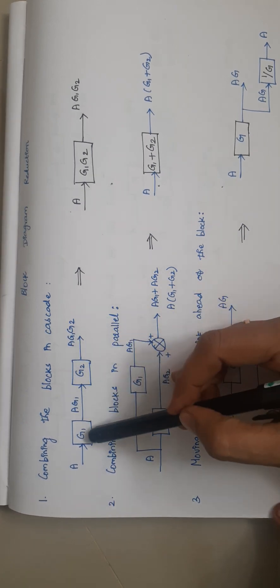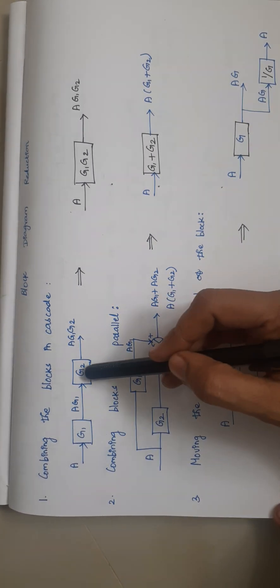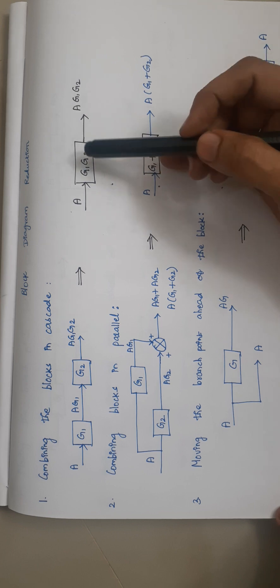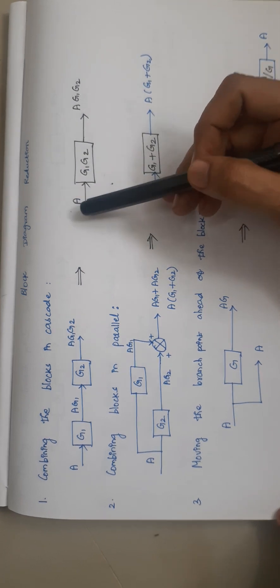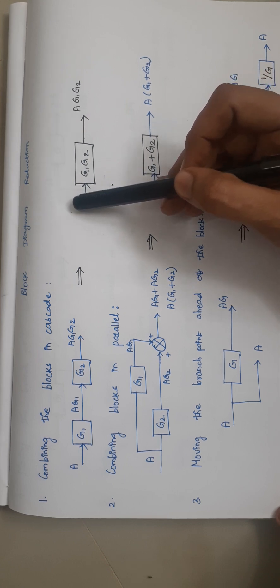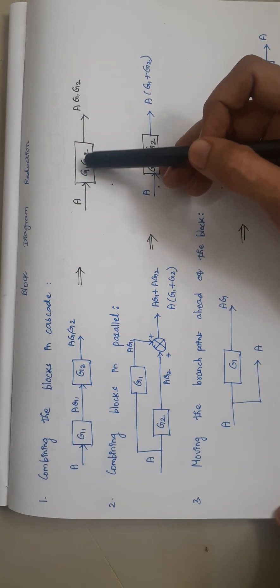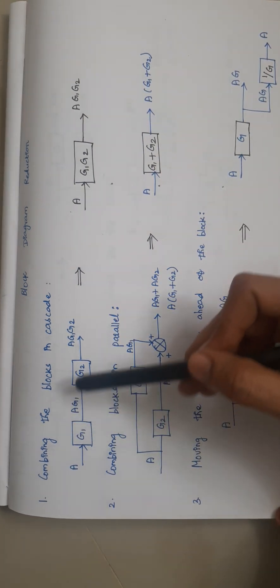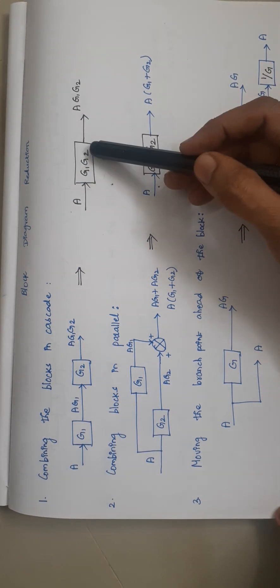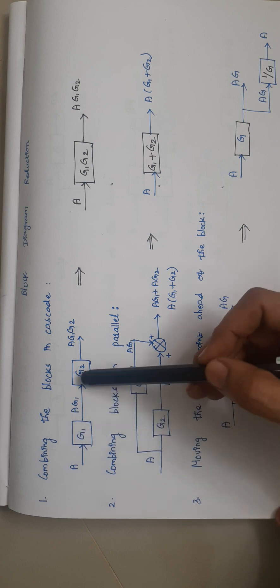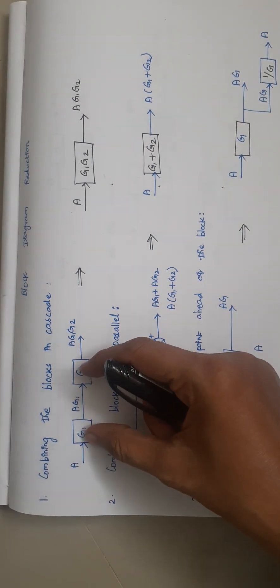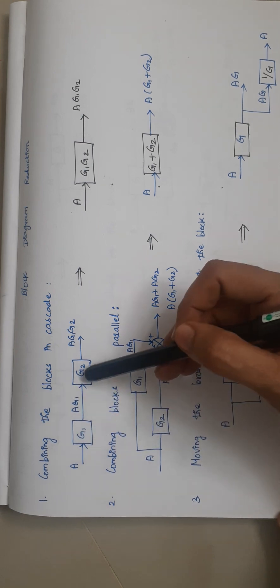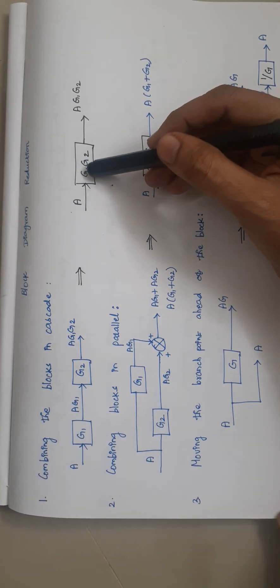These two blocks can be represented as a single block whose value is G1·G2. So whenever input signal A is given to this single block, we multiply: A into G1 into G2 is the output. Instead of having two blocks, we replace them with a single block with value G1·G2. When two blocks are in series connection, we replace them by a single block provided the elements G1 and G2 are multiplied.